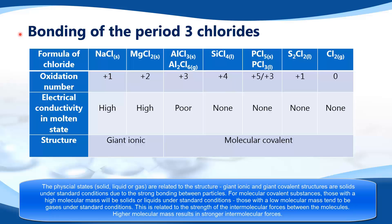Next we look at the bonding of the period 3 chlorides, starting with the formula and name of each chloride. NaCl is sodium chloride. MgCl₂ is magnesium chloride. AlCl₃ is aluminium chloride. SiCl₄ is silicon tetrachloride. PCl₅ is phosphorus pentachloride. PCl₃ is phosphorus trichloride. S₂Cl₂ is disulfur dichloride. And Cl₂ is chlorine.